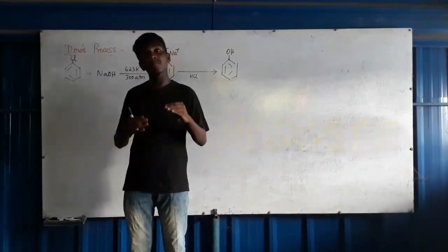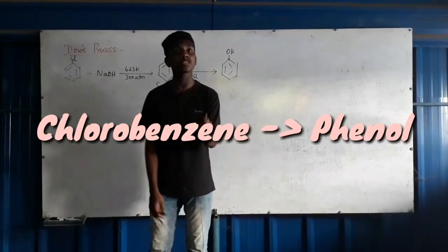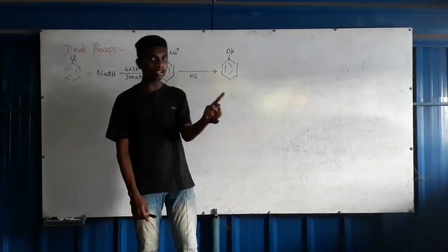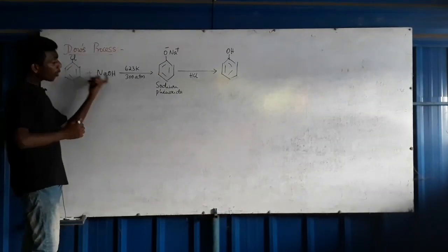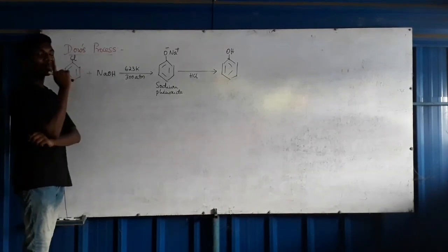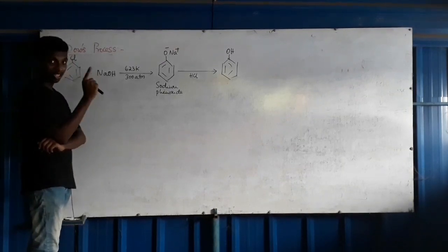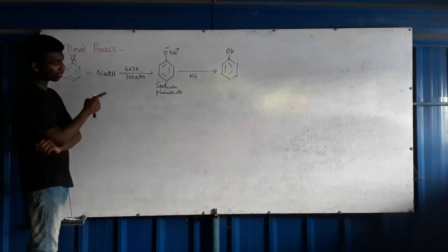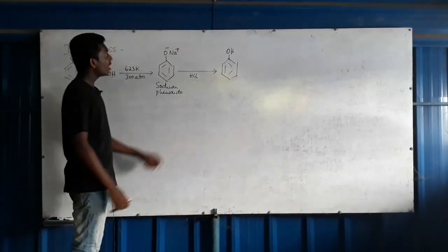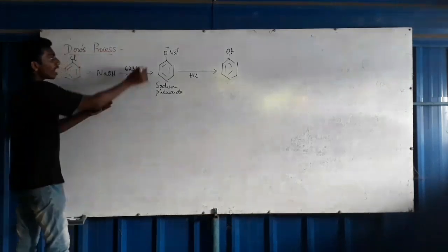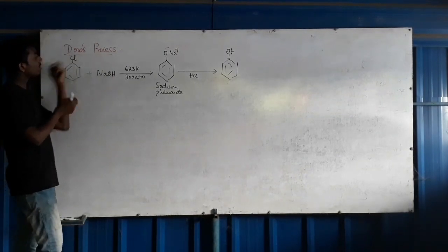The fourth reaction is the Dow's Process. In the Dow's Process, we prepare phenol from chlorobenzene. The equation is: chlorobenzene treated with sodium hydroxide (NaOH) at 623 Kelvin and 300 atm pressure — these are vigorous conditions.